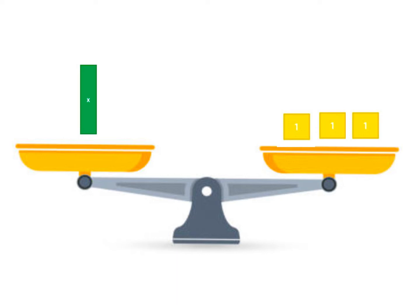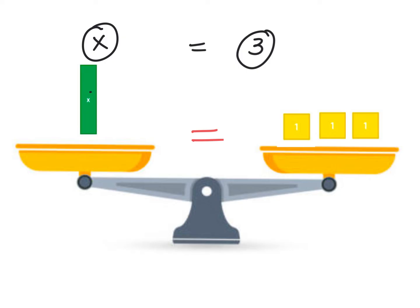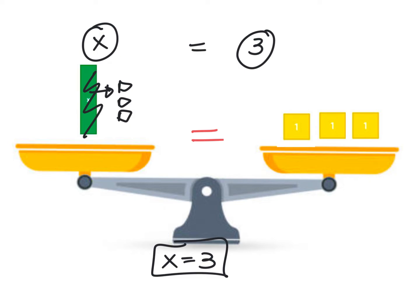Let's look at this one. The scale is balanced — the equation is balanced. On the first side I see just an X; on the other side I have three 1s. So for this to be the same, if that side weighs 3, then this side also has to weigh 3. This X tile is actually worth 3. So my solution here is X equals 3 — that X tile is worth 3 to make the scale balanced.